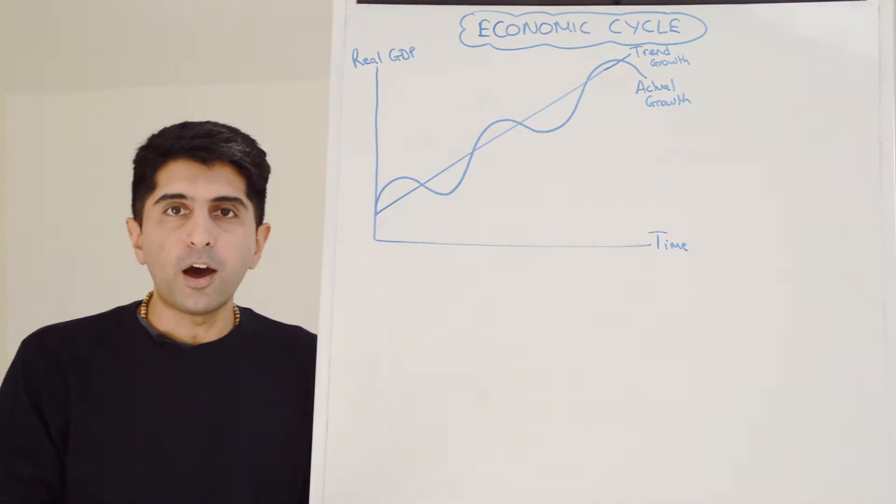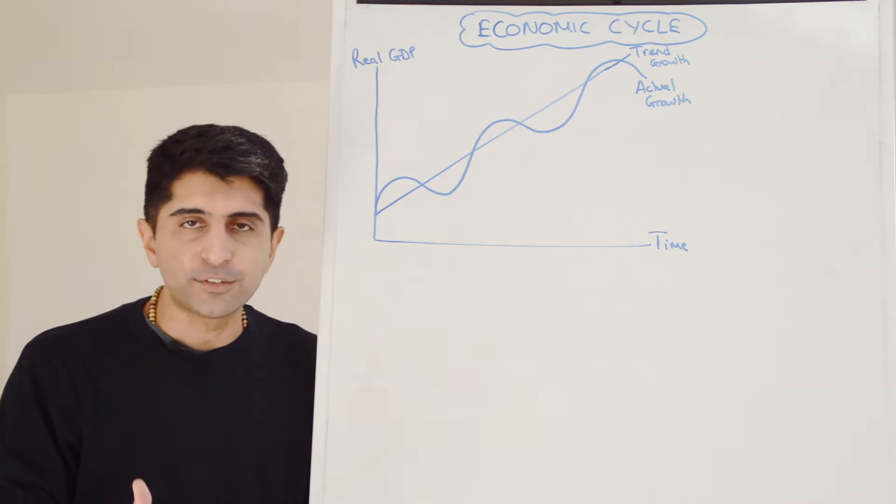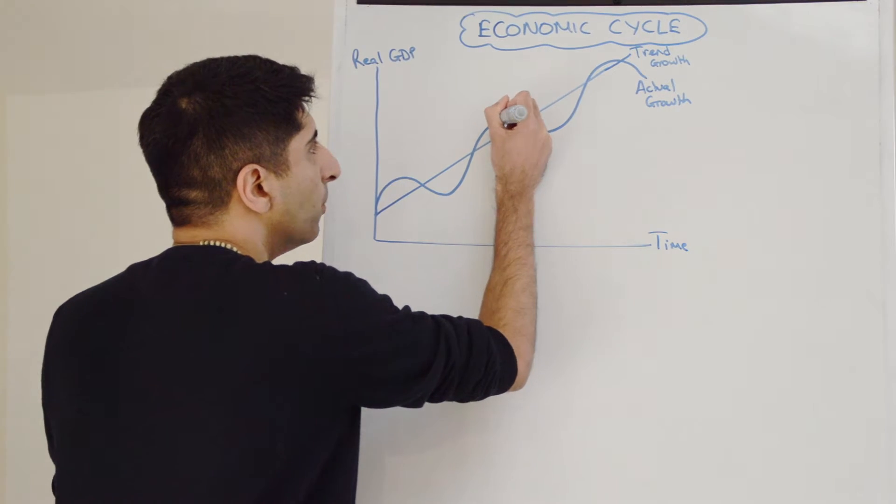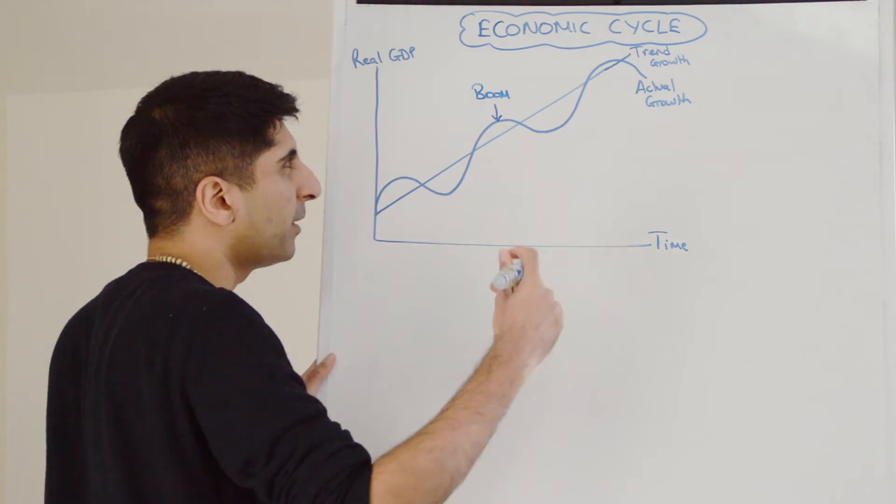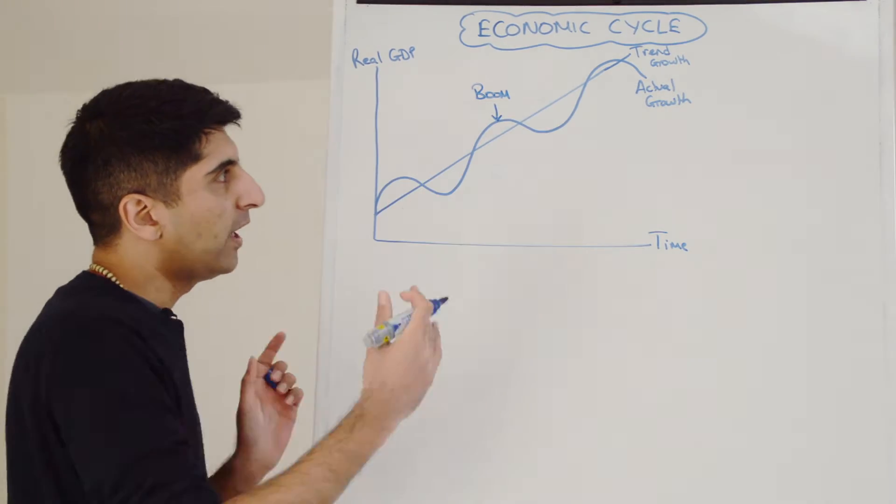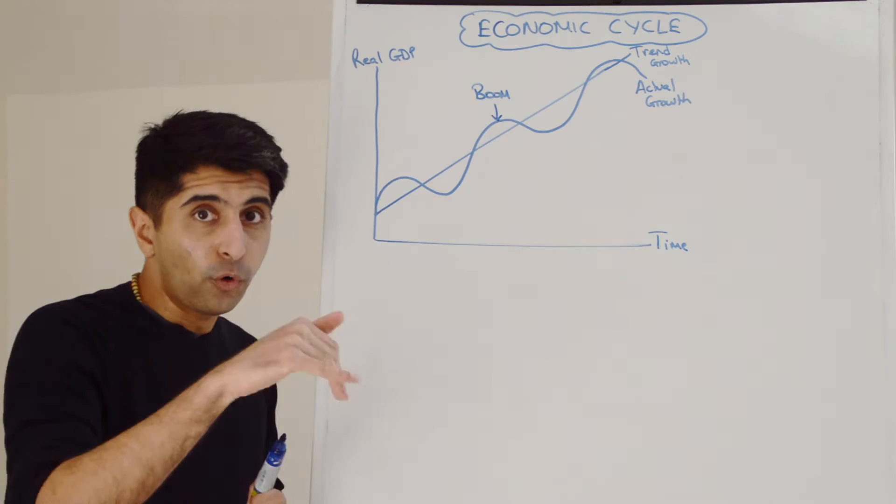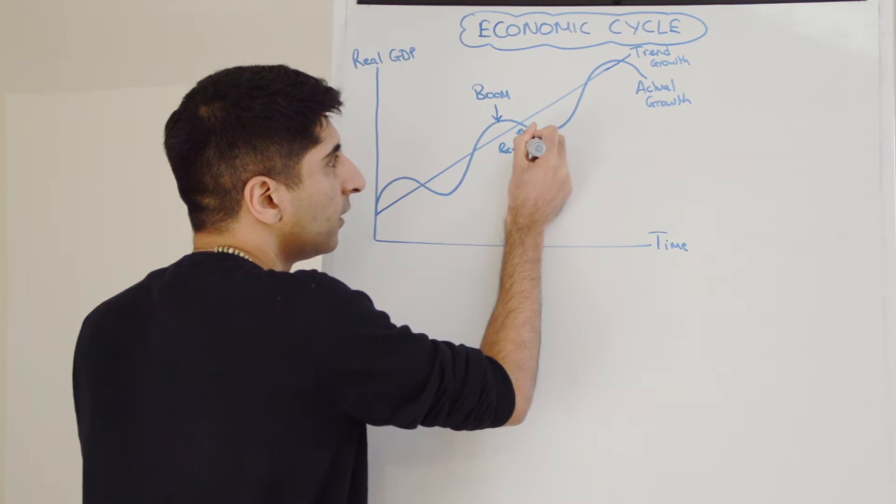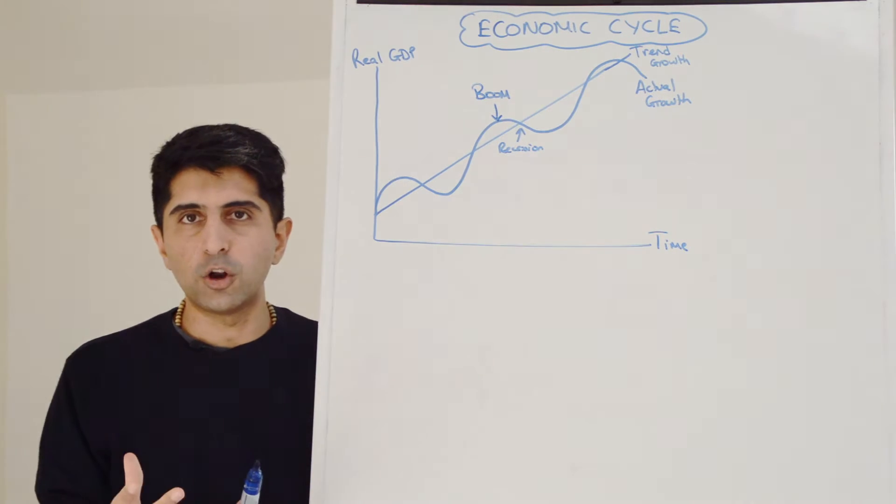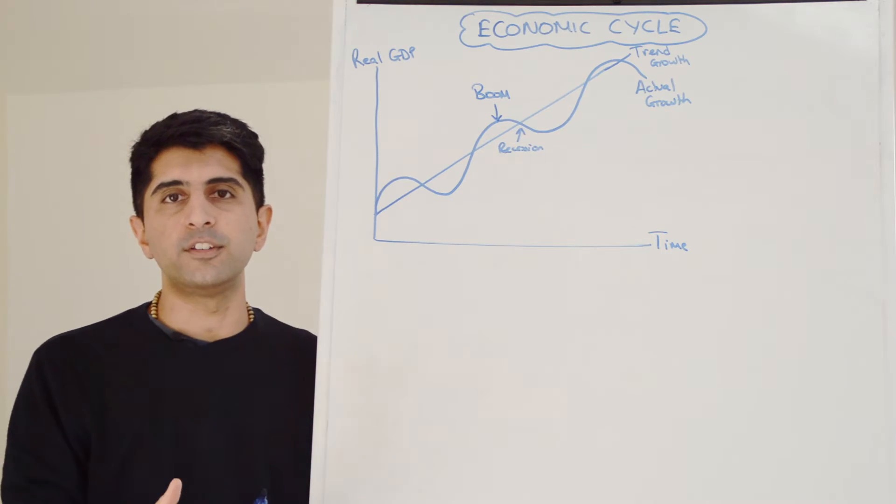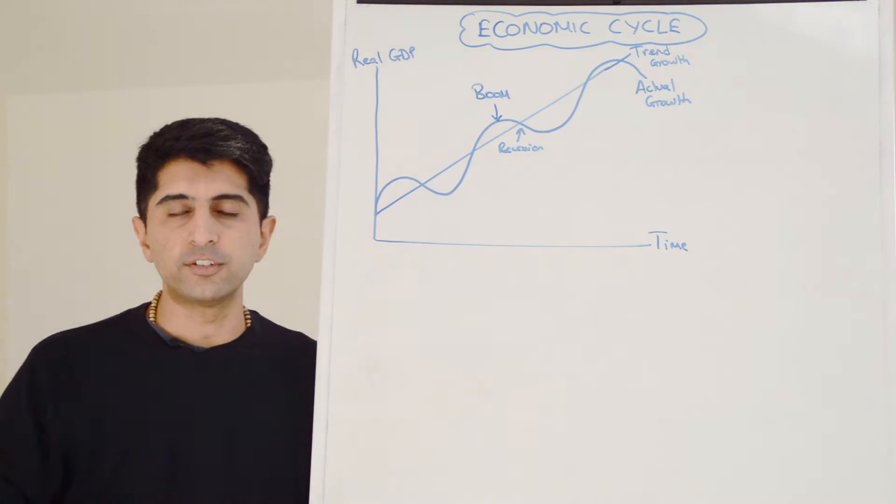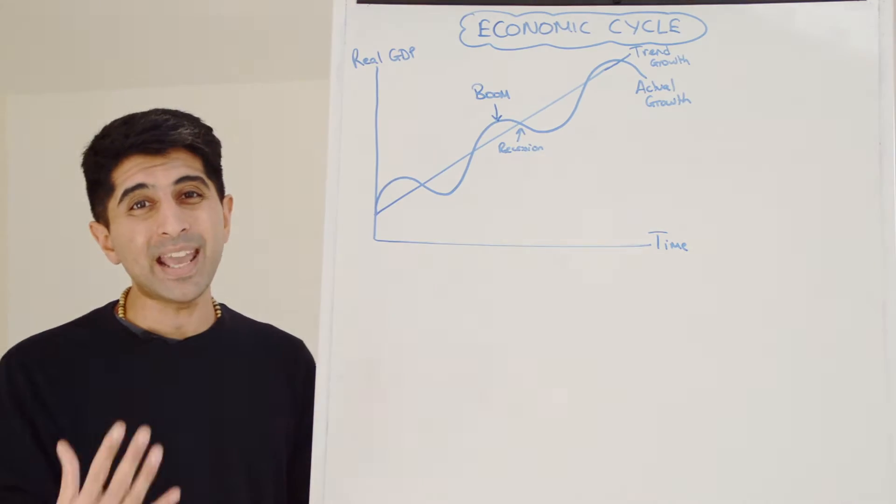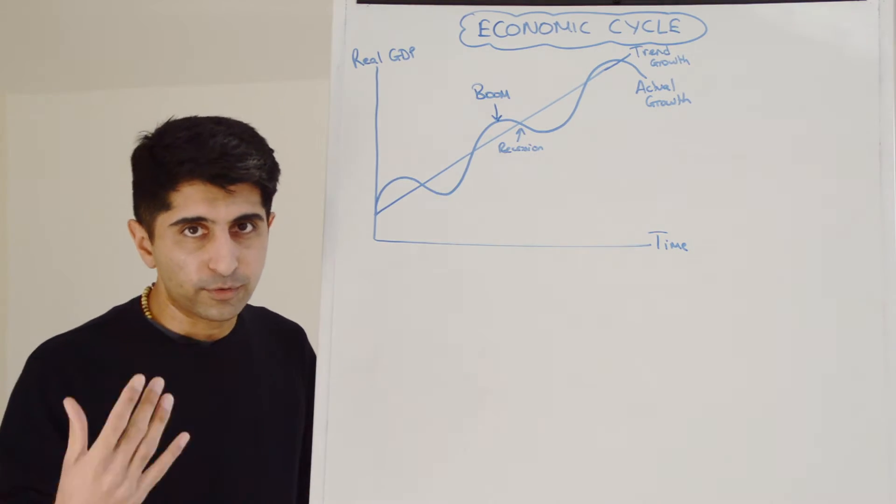What we can also show are the four different phases, the four different stages of the economic cycle using this diagram. So when actual growth is at its peak, we can call that a boom. That's when growth is rampant and very strong, greater than trend. When growth starts to fall from a boom, we can call that a slowdown or a recession. A recession is a technical term in economics defined as two successive quarters of negative growth. So break down the year into four quarters: January to March, April to June, July to September, October to December. Two successive quarters of negative growth, shrinking economy, is defined as a recession.